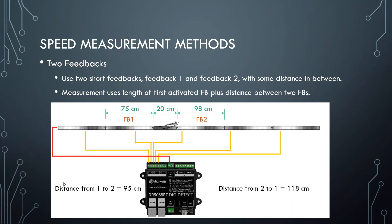The distance from one to two is the length of FB1, plus the distance of the track between the two sections. So the length of the turnout at 20 centimeters. So here the distance from one to two would be 75 plus 20, which is 95 centimeters.